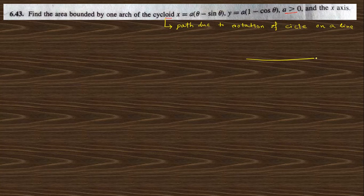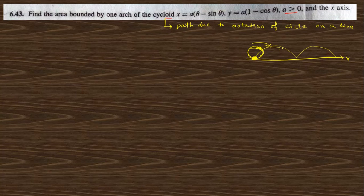Consider a line taken as the x-axis and a circle rotating on this line. If you take a point on the circle, as the circle rotates, the locus of this point traces a curve — that is the cycloid. We need to find the area under this curve for one arc. The arc repeats, and we need just one arc.